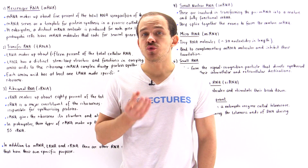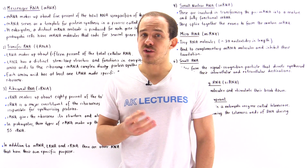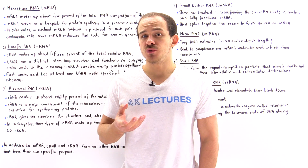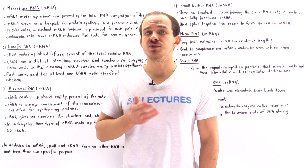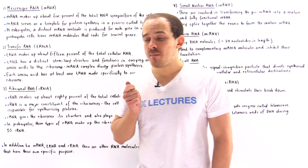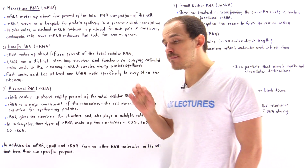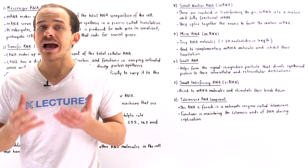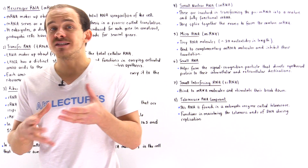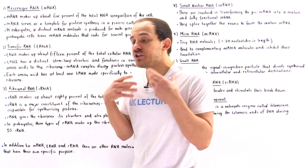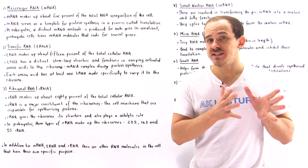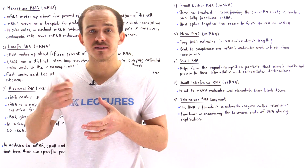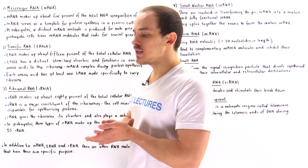DNA molecules are extremely important biological molecules because they store the genetic information that is needed to produce the different types of proteins used by the cell. Because of that, any type of damage or any type of mutation to the DNA molecule will lead to disastrous consequences, and to prevent this from happening, we don't actually want to use the DNA directly to synthesize the proteins every single time we need to produce some type of protein.